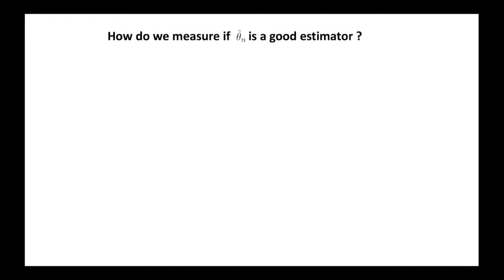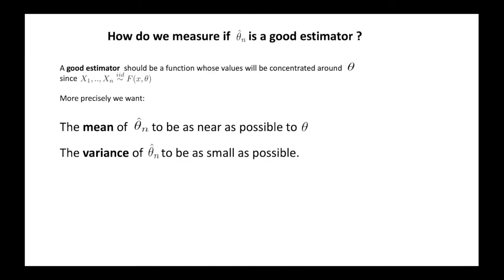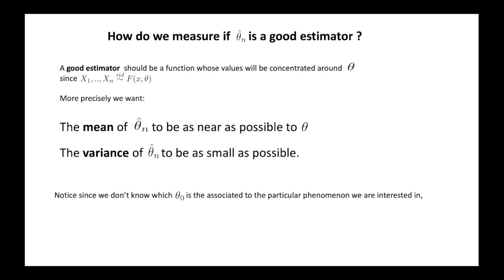A point estimator can be any function from the sample to theta capital. How can we know which functions are the best ones to provide an estimation? A good estimator will be one whose values will be concentrated around theta, if we assume that our sample comes from the distribution f(x, theta). An easy way to look at this problem is to consider the mean and the variance of the estimator. We want the mean to be equal to theta, or as close as possible, and the dispersion around the mean — captured by the variance — to be as small as possible. Note that since we don't know the value of theta_0 associated to our phenomenon, we have to ask the estimator to work well for every value that theta can take, namely for all the associated distributions f(x, theta).